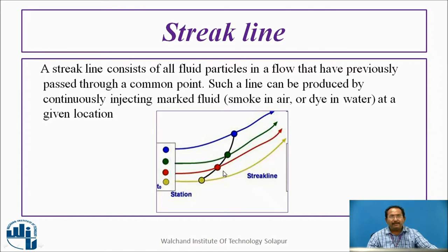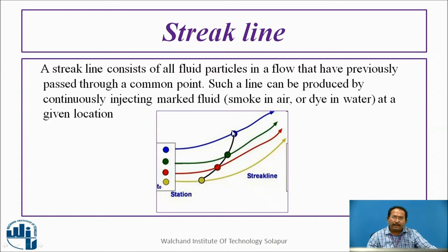A streak line consists of all fluid particles in the flow that have previously passed through a common point. Such a line can be produced by continuously injecting marked fluid. Examples are smoke in air or dye in water when velocity is increased.